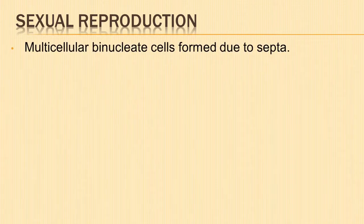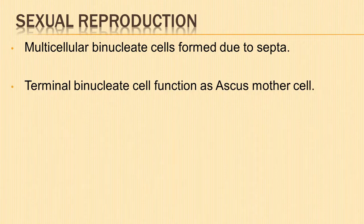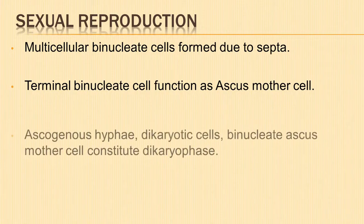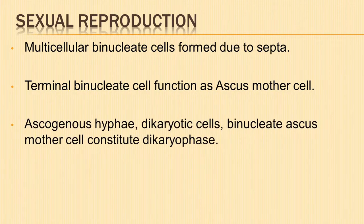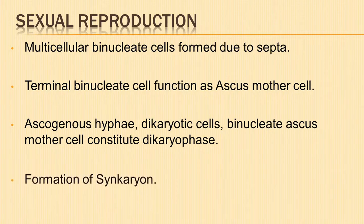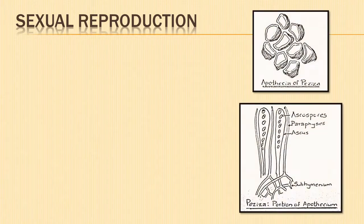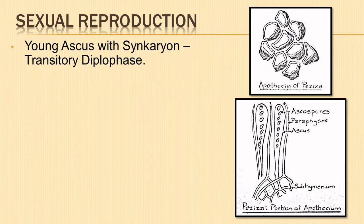Formation of septa results in multicellular binucleate cells. The terminal binucleate cells of the ascogenous hyphae function directly as ascus mother cells. The ascogenous hyphae, the dikaryotic cells from which they are developed, and the binucleate ascus mother cells constitute the dikaryophase in the life cycle. The two nuclei in the ascogenous cell fuse to form the synkaryon. The young ascus with a synkaryon represents the transitory diplophase.